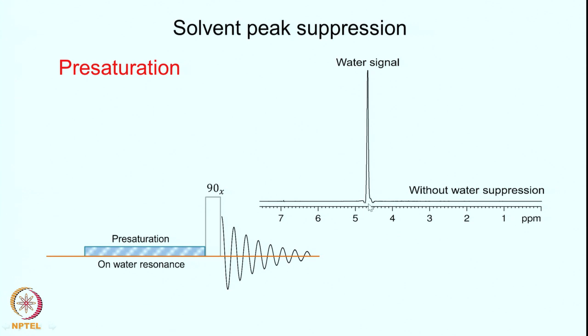Here is the spectrum of a sample in water. You have a huge water signal — this is a spectrum without water suppression, and you will see only the signal of the water; you do not see anything of your sample at all. One way to suppress the solvent signal is to do what is called a double resonance experiment, where you use a second RF and irradiate the solvent resonance. The second RF frequency matches exactly with the water resonance, so you put that RF here with reasonably high power, so that it only affects the energy levels corresponding to the water and all the other signals are not affected to a reasonable approximation.